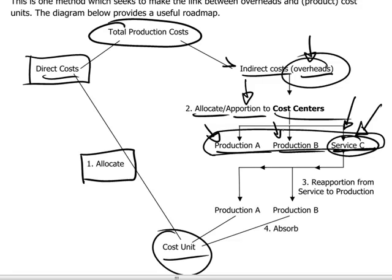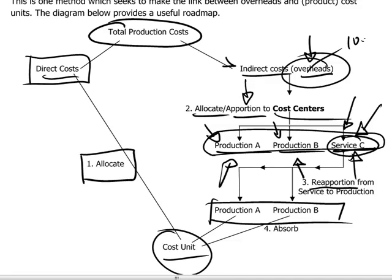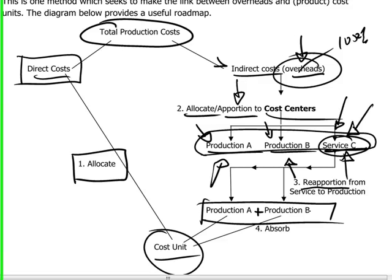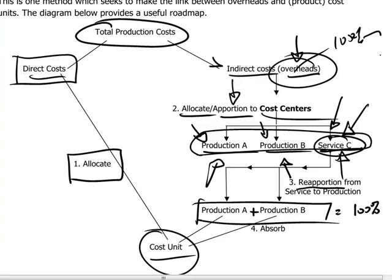After that, we need to reapportion the costs that have been grouped under the service cost centers — there may be more than one — and place them with the production centers. At the end of the day, we have taken 100% of the overhead costs and they are now located among the production cost centers. We are not creating or losing overhead costs along the way; we start with a fixed monetary amount and the exercise is to group and allocate or apportion these overhead costs to the respective production departments.